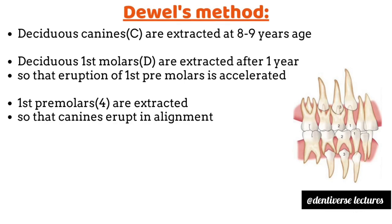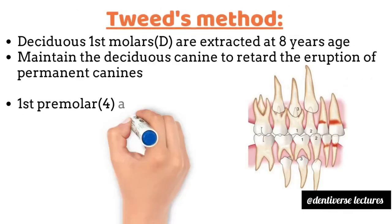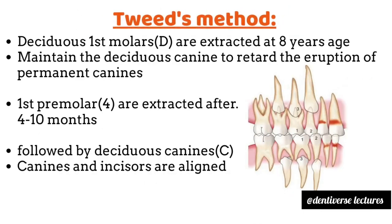In Dewey-Will's method, the second step is to extract deciduous first molars after one year so that eruption of the first premolar is accelerated. The third step is to extract first premolars so that the canines erupt in alignment. In Tweed's method, firstly deciduous first molars are extracted at eight years of age, maintaining the deciduous canine to retard eruption of permanent canines.